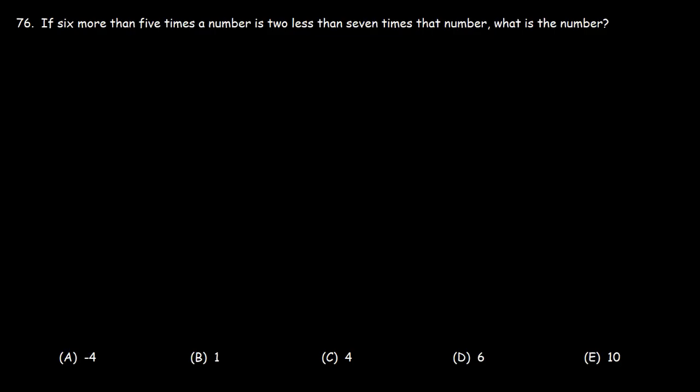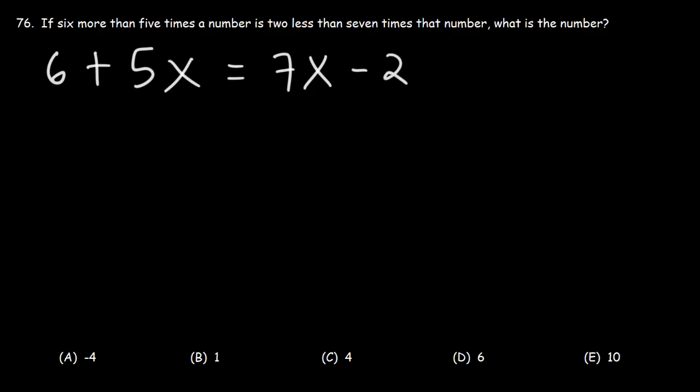Problem 76: If 6 more than 5 times a number is 2 less than 7 times that number, what is the number? We need to convert this into an equation. '6 more than' means 6 plus something, so '6 more than 5 times a number' is 6 plus 5x. 'Is' means equal to. '2 less than 7 times that number' — 7 times that number is 7x, so 2 less than 7x is 7x minus 2.